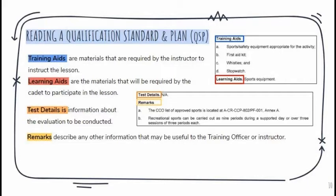Test details include information about the evaluation being conducted. In this particular lesson there is no evaluation, but for one of your lessons you may have an evaluation. Remarks describe any other information that might be useful to you as an instructor or to the training officer. For example, the CCO list of approved sports is useful to the instructor to check which sports qualify, while information about recreational sports periods during a supported day would be more useful to the training officer.